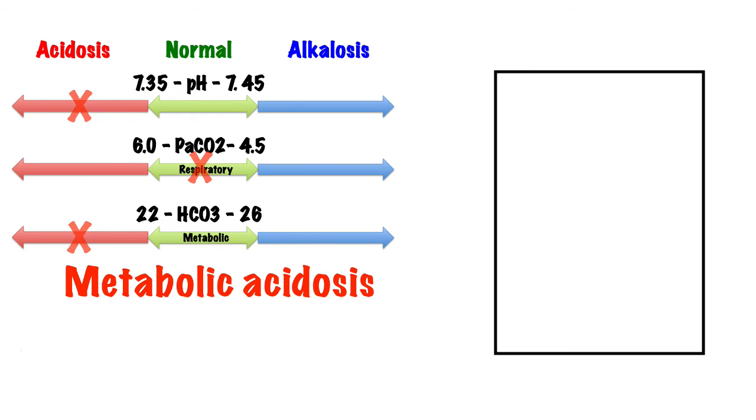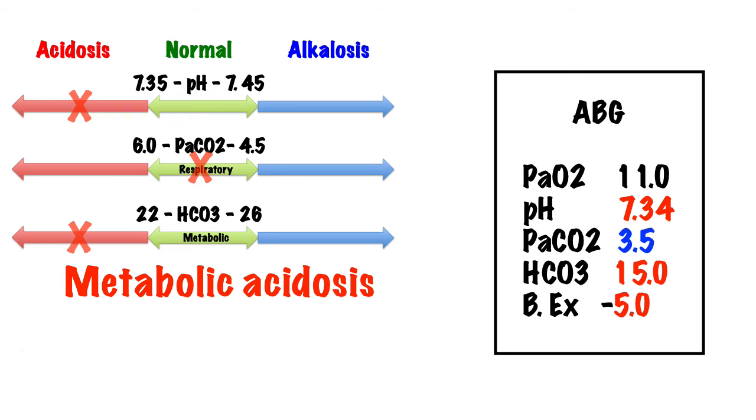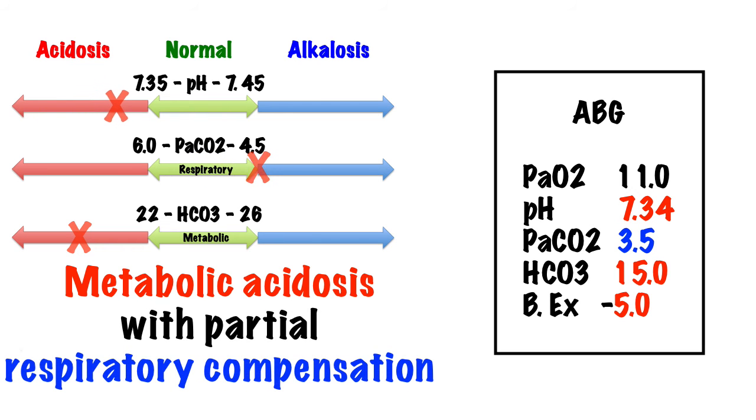The body will try to balance this acidosis by increasing the respiratory rate, blowing off carbon dioxide to try to bring the pH as close to normal as it can.